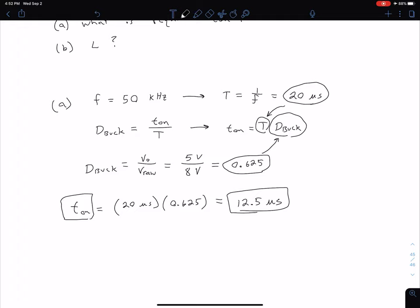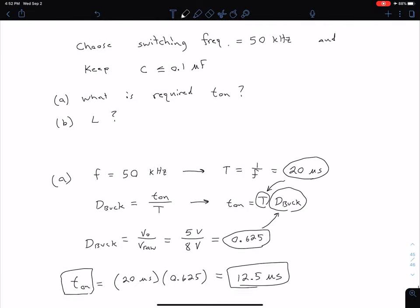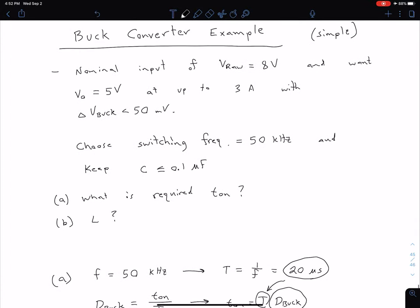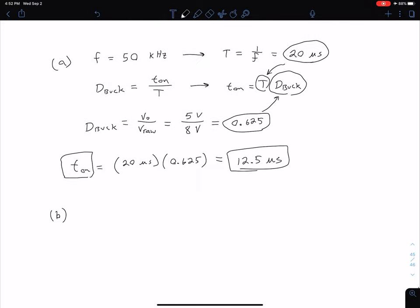Now we want to figure out what our inductance value is for part B. We have to look at our given information. In general, in previous videos, we've seen that our inductor is related to our ripple voltage, our delta V_buck, as well as our ripple current, our delta I_buck. In this case, we're given information about our delta V_buck. So we're going to use that particular equation. We're also going to need to use this information about our frequency, as well as the duty cycle that we've calculated, and the value of our capacitor. So let's come down here and put all of that together.